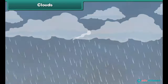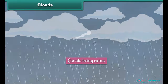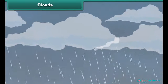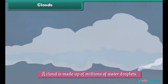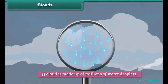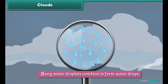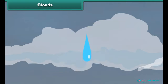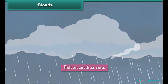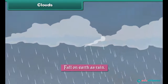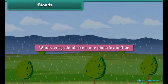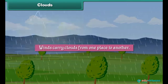Clouds bring rains. A cloud is made up of millions of water droplets. Many water droplets combine to form water drops. As the drops grow in size, they become heavy and fall on earth as rain. Winds carry clouds from one place to another.